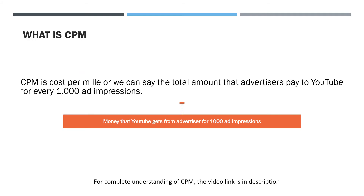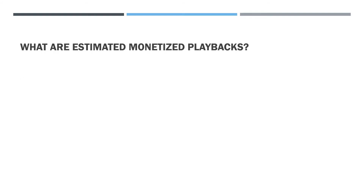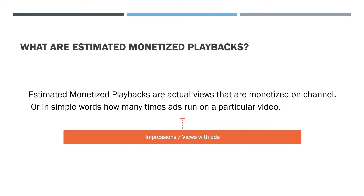CPM is cost per mil, or we can say, the total amount that advertisers pay to YouTube for every 1000 ad impressions. For a complete understanding of CPM, the video link is in the description.